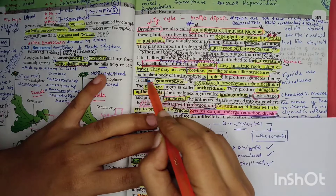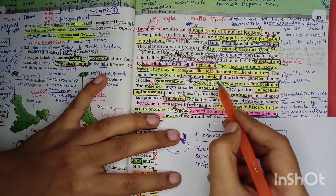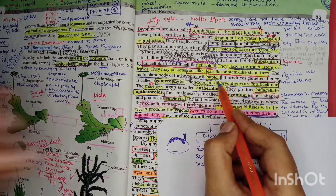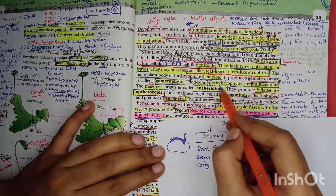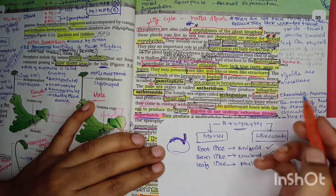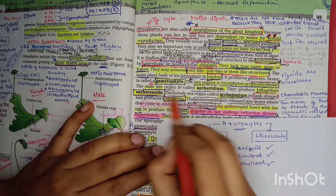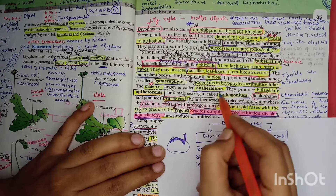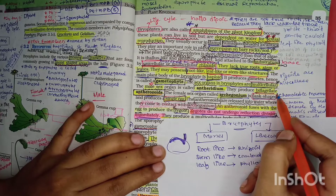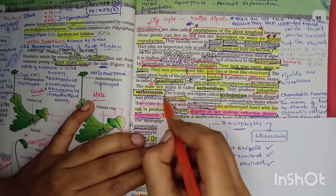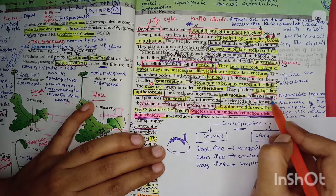The main plant body of bryophytes is haploid - the dominant stage is the gametophyte, which is haploid. It produces gametes, hence it is called gametophyte. The sex organs in bryophytes are multicellular. The male sex organ is the antheridium, which is biflagellated - two flagella are present - and produces antherozoids.